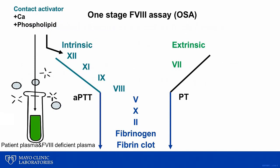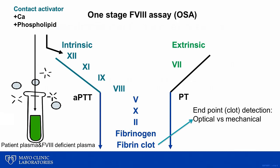Next, we will review the one-stage and chromogenic assays. The one-stage assay is the most commonly used assay in the United States. Patient plasma containing all the clotting factors except the factor being tested, like factor VIII, which may be reduced or absent, is initially mixed with factor VIII-deficient plasma. Coagulation is initiated by addition of a contact activator and time to clot formation is measured. The endpoint is typically detected using either optical or mechanical endpoint detection systems. The contact activator may be silica, kaolin, or ellagic acid-based.